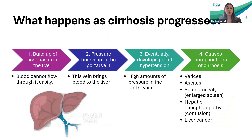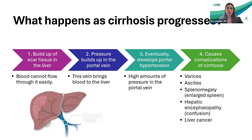As liver disease progresses and cirrhosis develops, there is a buildup of scar tissue in the liver, resulting in decreased blood flow through the liver. Pressure builds up in a vein called the portal vein — the vein that brings blood into the liver. Eventually you develop something called portal hypertension, which is high pressure in that portal vein, and that leads to complications of cirrhosis. Patients can have cirrhosis and buildup of pressure without complications — that's called compensated cirrhosis. But once the pressure overwhelms the system, you develop complications: varices, ascites, splenomegaly, encephalopathy, and liver cancer.